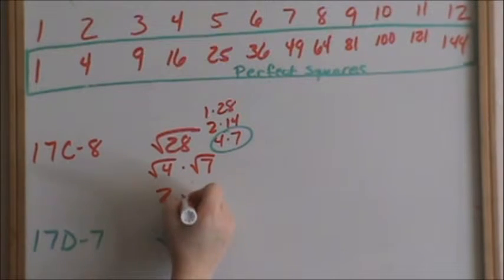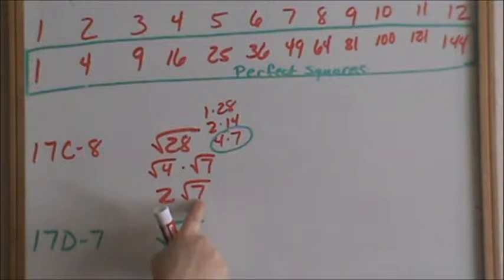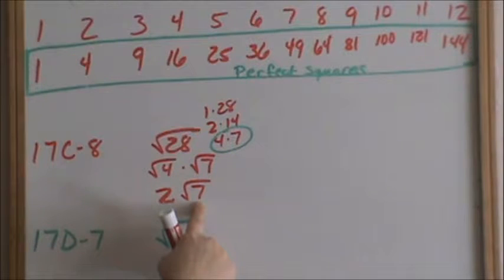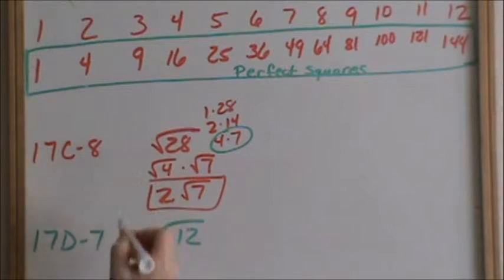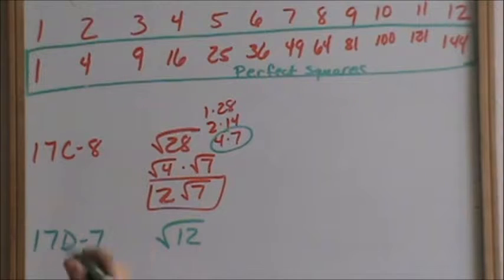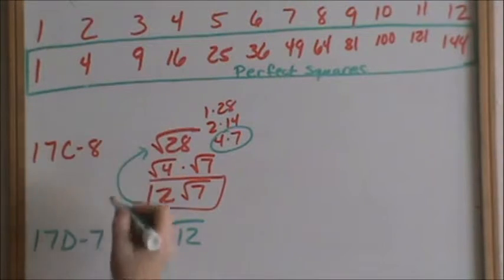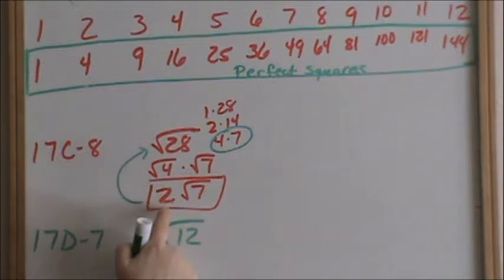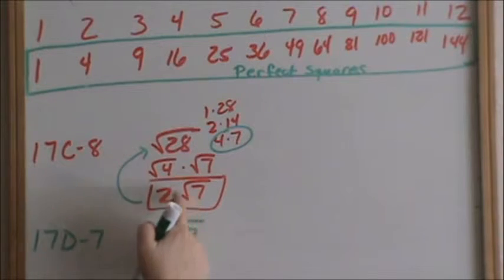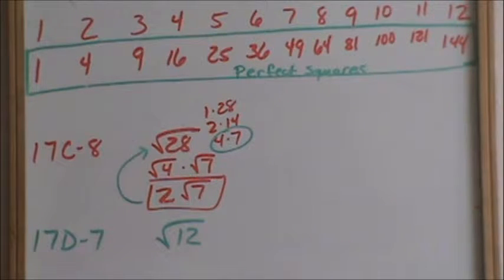We cannot simplify square root of 7 anymore. The factors of 7 are only 7 times 1, and neither one of those are a perfect square. So square root of 7 cannot be simplified anymore. Therefore, 2 times square root of 7 is the same thing as square root of 28. You can put square root of 28 in your calculator and get a decimal number, then do 2 times square root of 7, and they should give you the same decimal number.